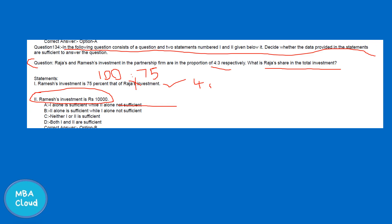Rajas and Ramesh's investments are in the ratio 4 to 3. If Ramesh's investment is 75% of Rajas's, and the investment is 10,000, we can calculate the answer. Option B: the second statement alone is sufficient, while statement one is not sufficient, because statement one gives only the proportion of investment, not the actual value.